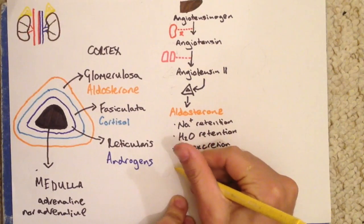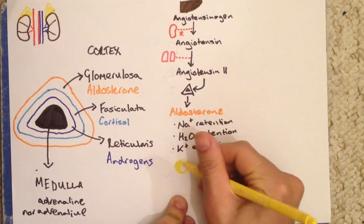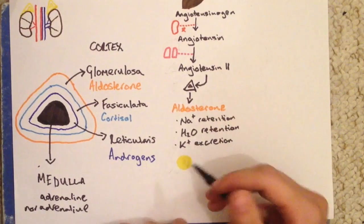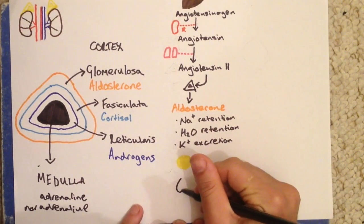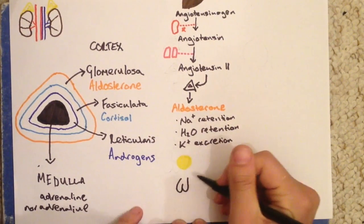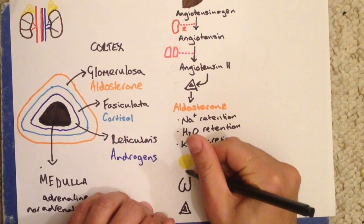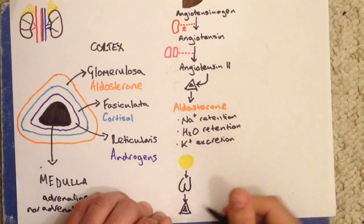By hanging on to our sodium and water, our blood pressure is going to rise. Our kidneys will then detect this rise in blood pressure and they will stop releasing renin, so our blood pressure remains at a stable level. This is a good example of a negative feedback loop.